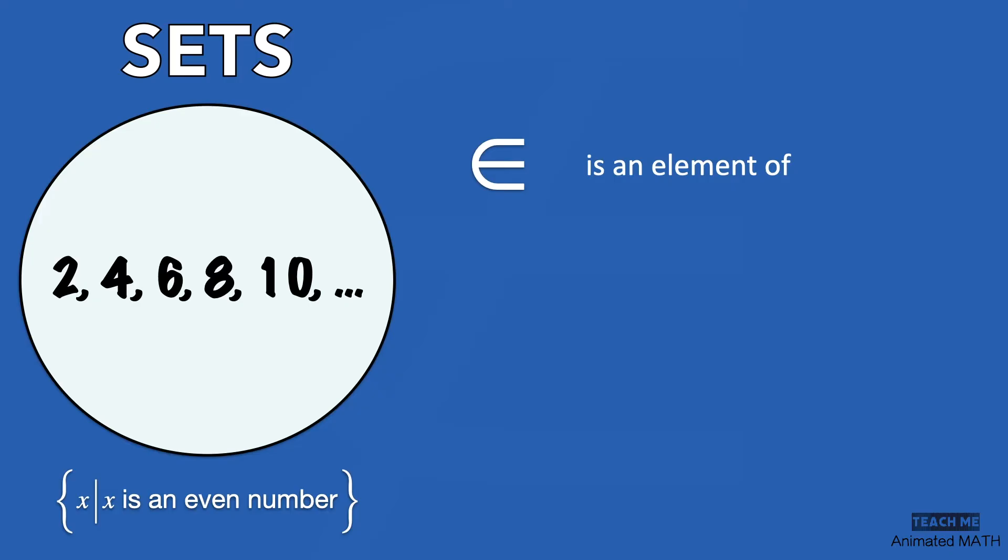For items that are not members of a set, we use this symbol. This symbol means is not an element of or is not a member of. Take a look at how these symbols are used.